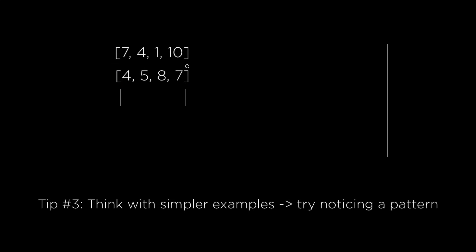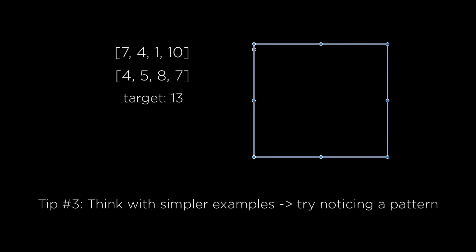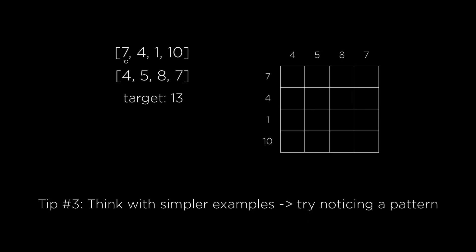So I came up with this example: two arrays each with only 4 elements instead of 6, and a target of 13. These arrays are small enough that it's easy to compute the sum of every single pair. I thought that using that information I might be able to spot a pattern. I made a diagram on paper where the first array — 7, 4, 1, 10 — is on the y-axis, and the second array — 4, 5, 8, 7 — is on the x-axis, and started computing the sums. Then I realized it would be better to sort the arrays first before computing the sums, to make it easier to spot a pattern.